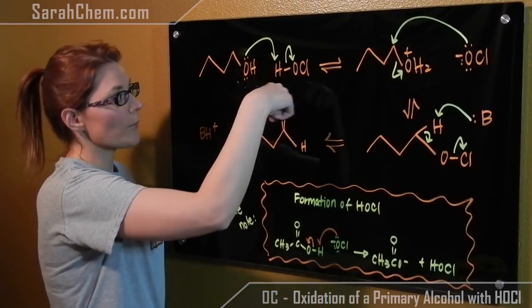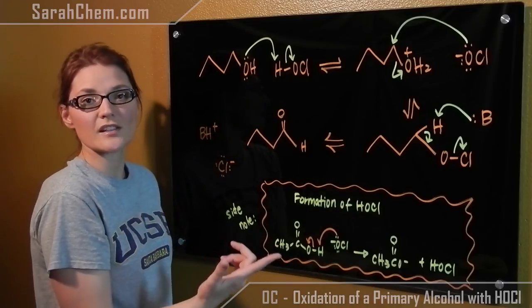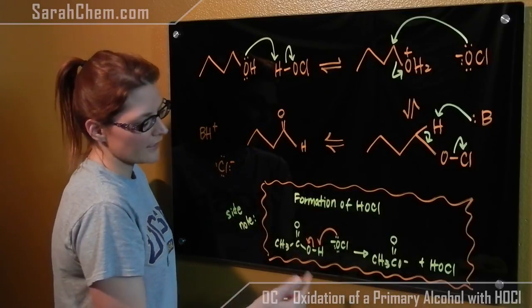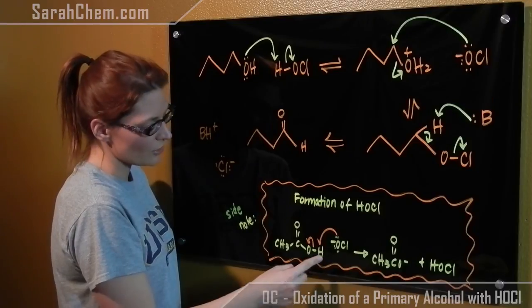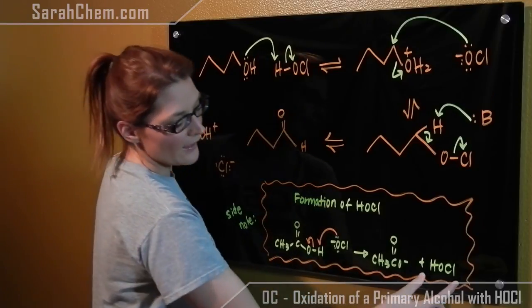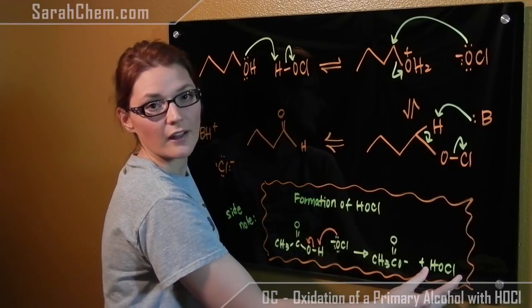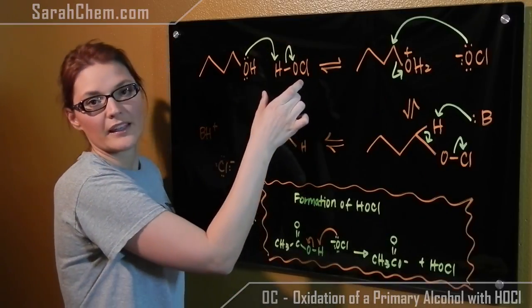On a side note, remember this HOCl is formed in solution. What happens is our hypochlorite group will come and steal hydrogen off of the acetic acid, and there's the formation of the HOCl, which is then used in the beginning part of this mechanism.